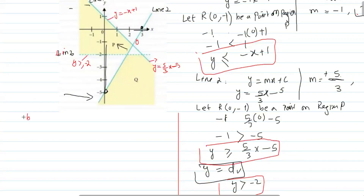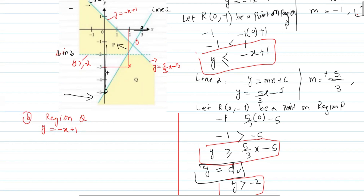Now for part B, we need to find the inequalities for region Q. We already have the three straight line equations. To determine the inequalities for region Q, we take a point S that lies in region Q. Drawing a vertical line from S gives x-coordinate 2, and a horizontal line gives y-coordinate minus 3. So point S has coordinates (2, minus 3).